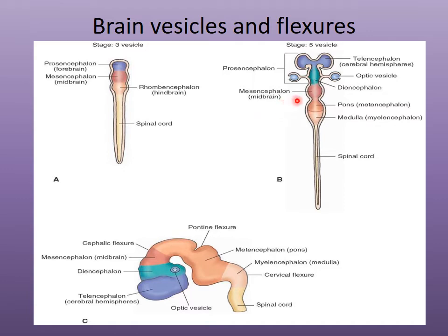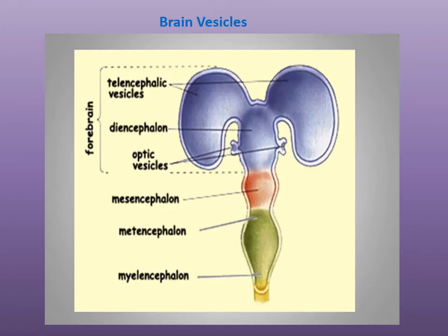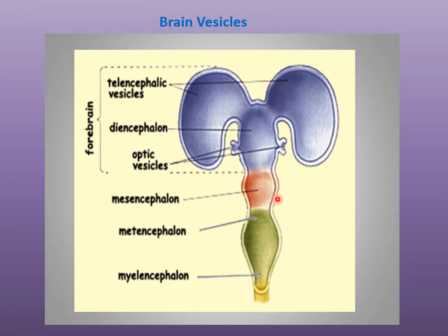In this lecture we will discuss the mesencephalon, which develops into the midbrain. The mesencephalon remains as the mesencephalon and does not change much. There are four brain vesicles: the two lateral swellings called the telencephalic vesicles, which form the primordia of the cerebral hemispheres, and one median swelling which is the diencephalon.